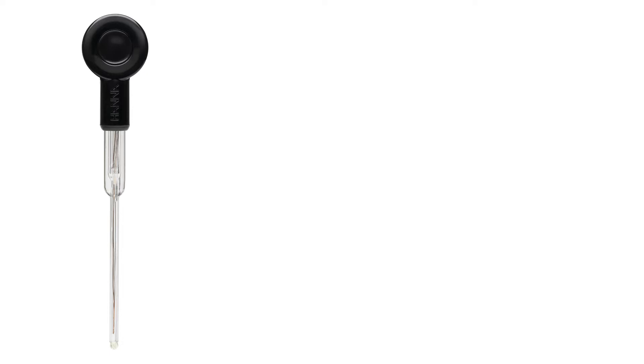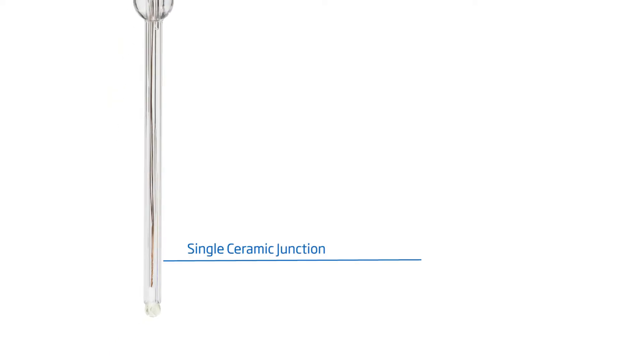This 5mm micro bulb electrode features a single ceramic junction in the outer reference cell, and the small spherical pH sensing portion is made with low temperature glass and is designed with an integrated temperature sensor. This design consideration is ideal for pH measurements in vials, test tubes, and smaller vessel applications.